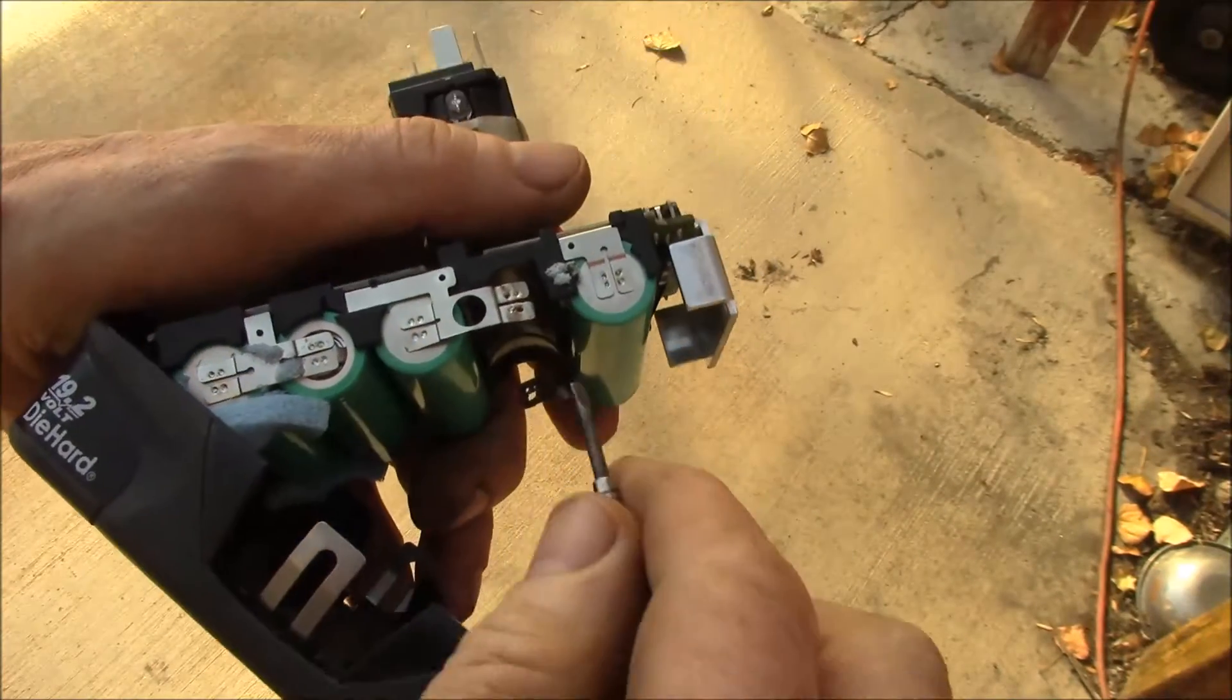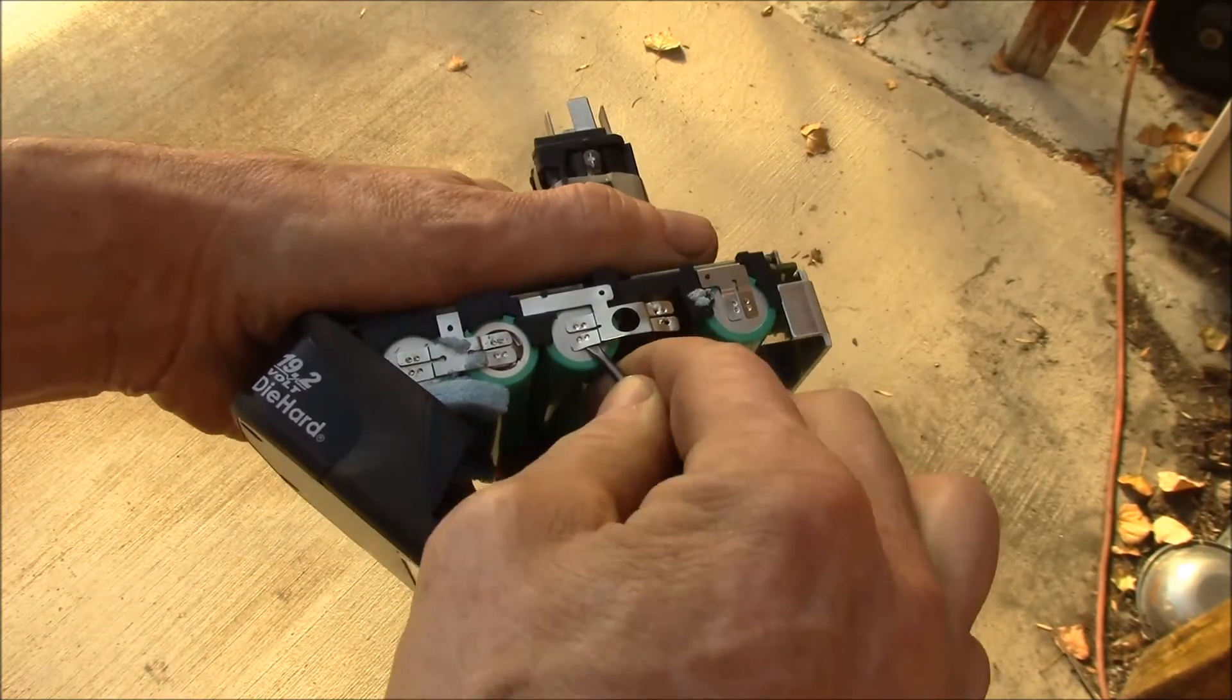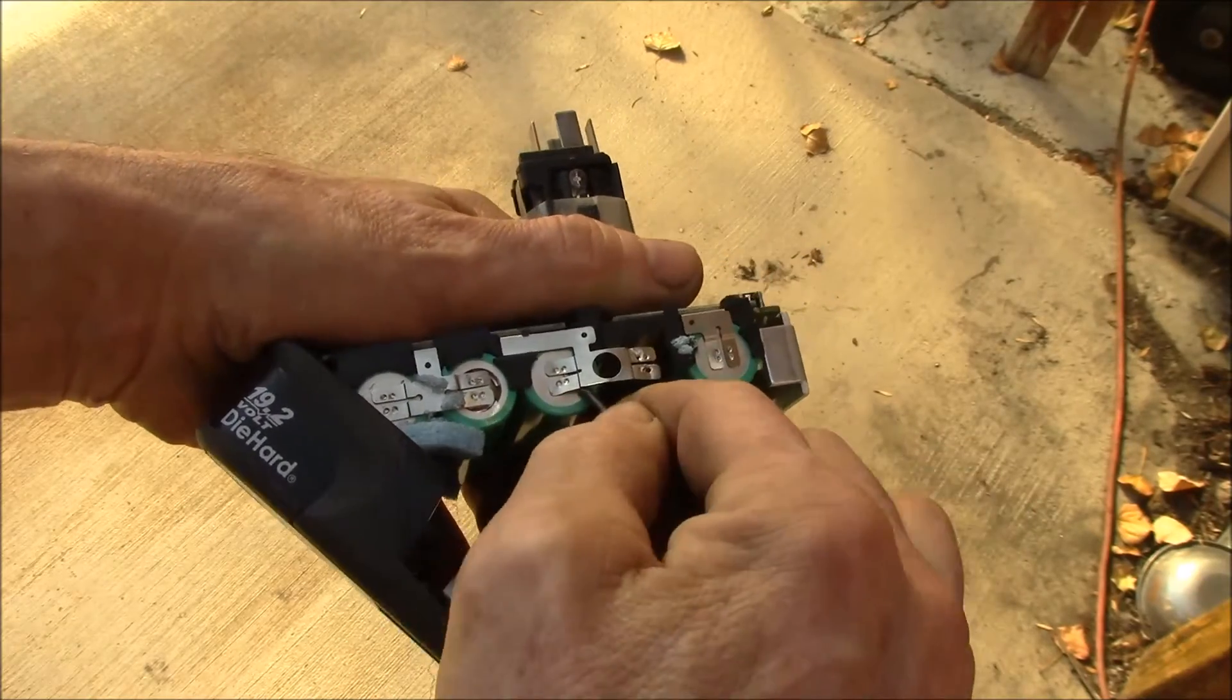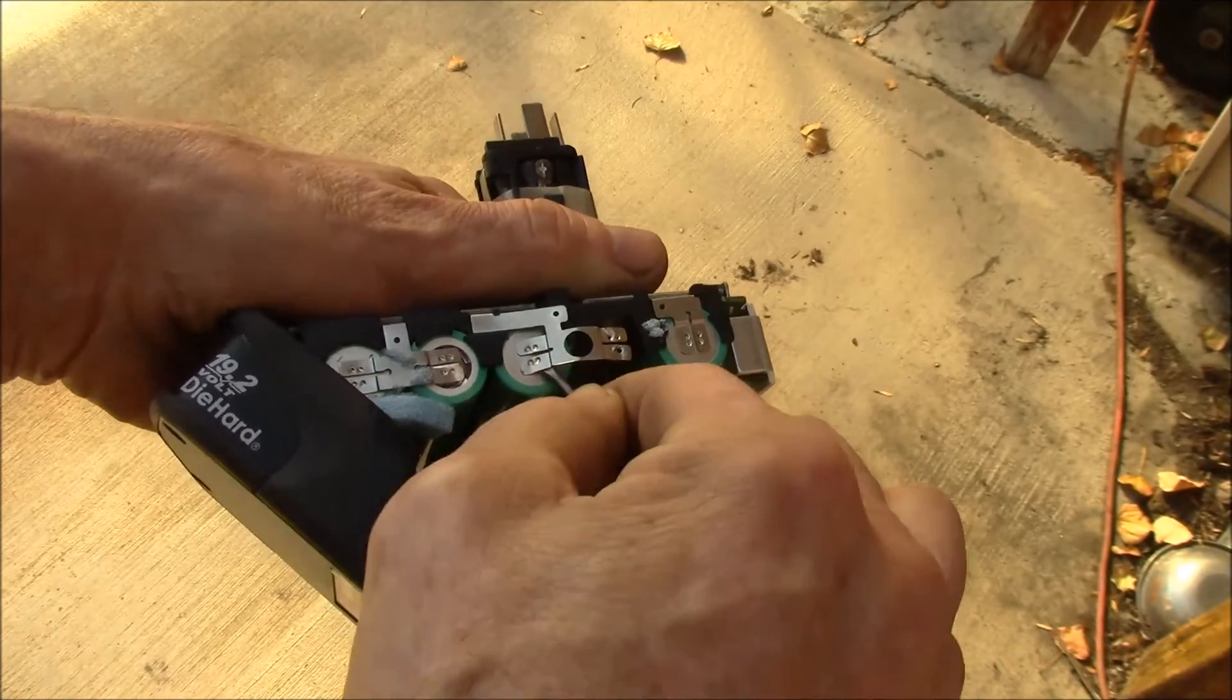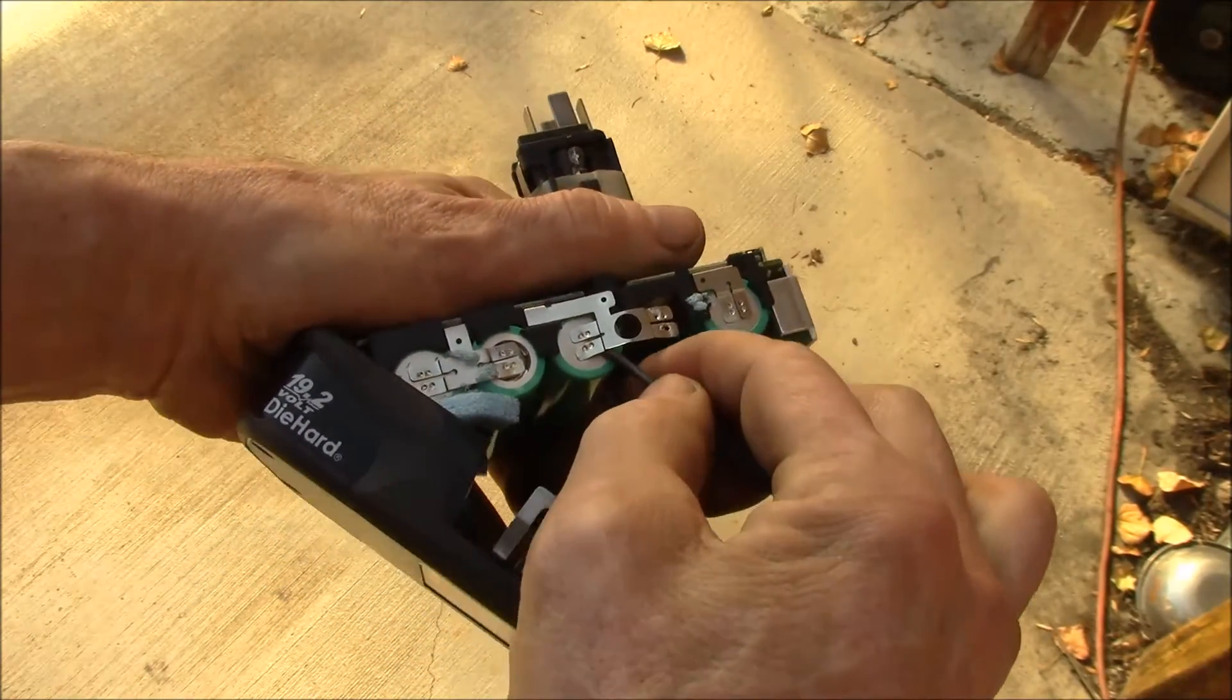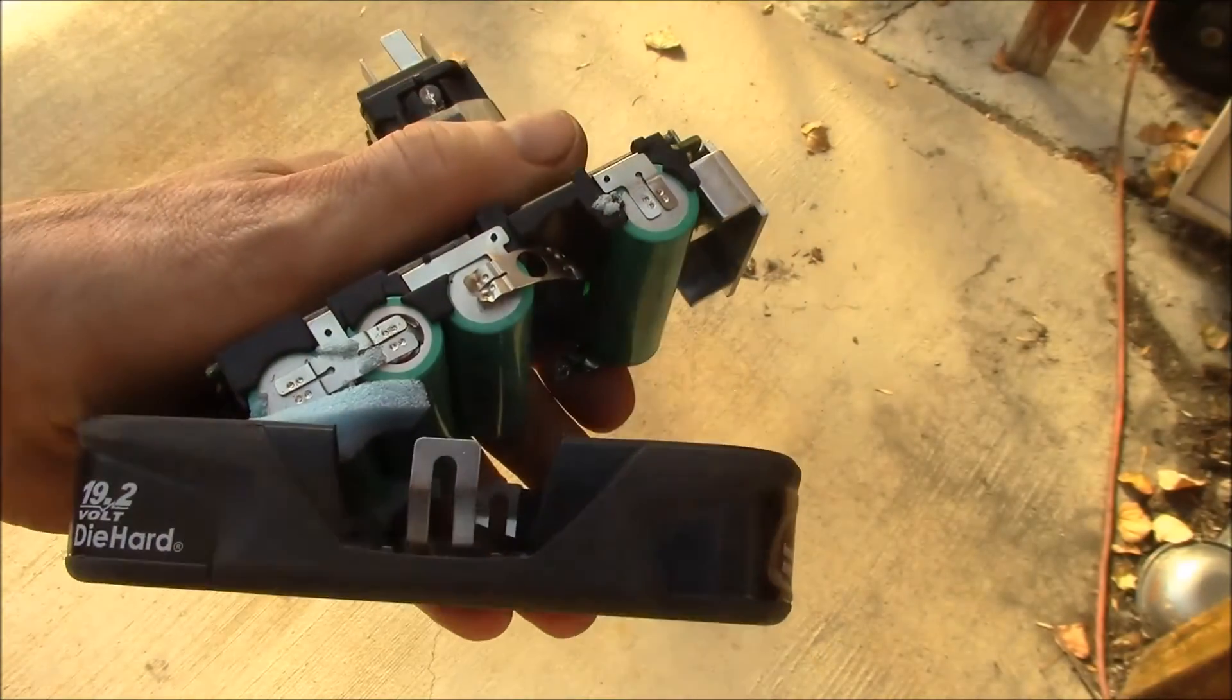I found that you can get in here if you can see that with a little jeweler screwdriver and pop these little spot welds. You don't want to get too aggressive, but just pop them loose.